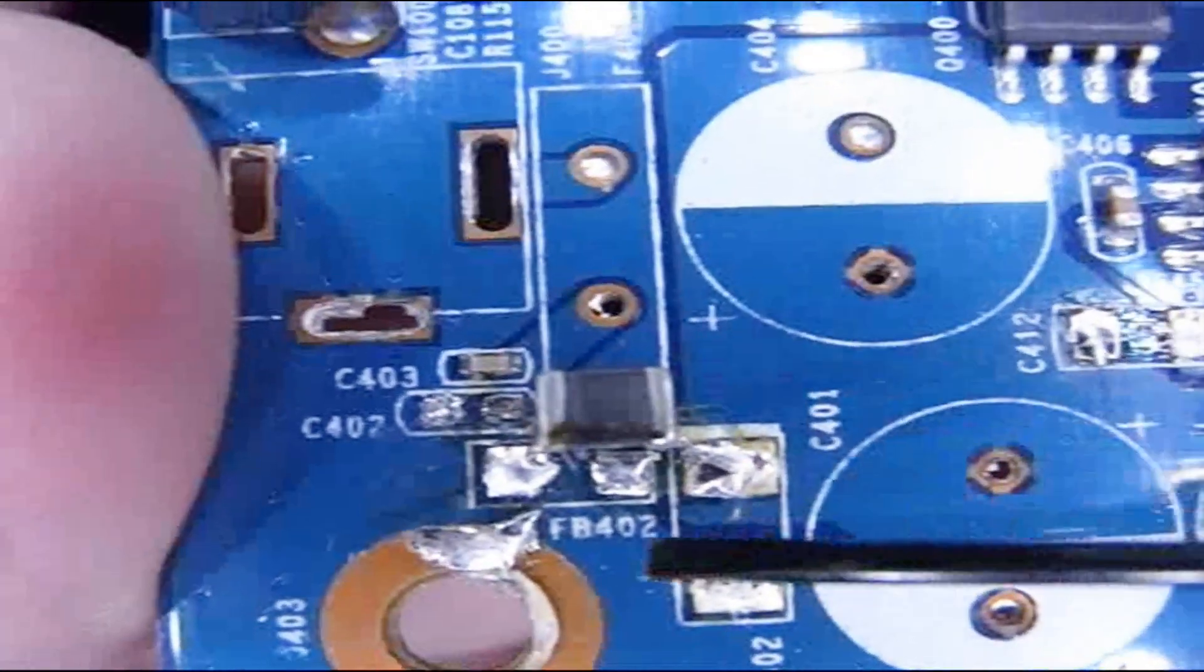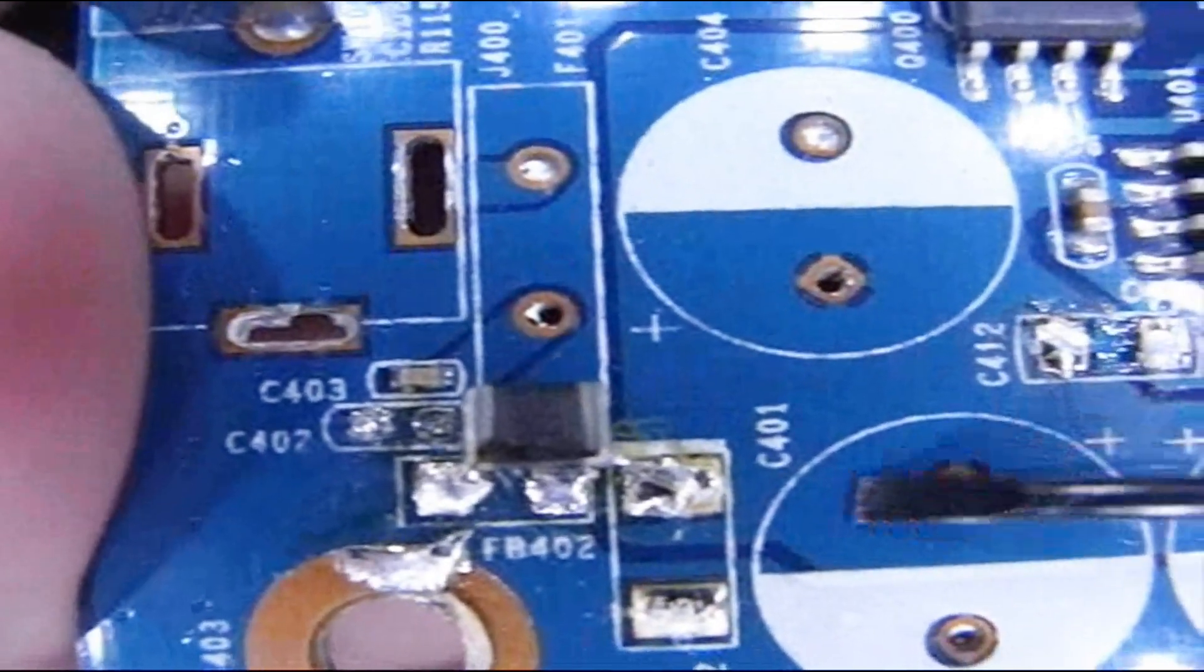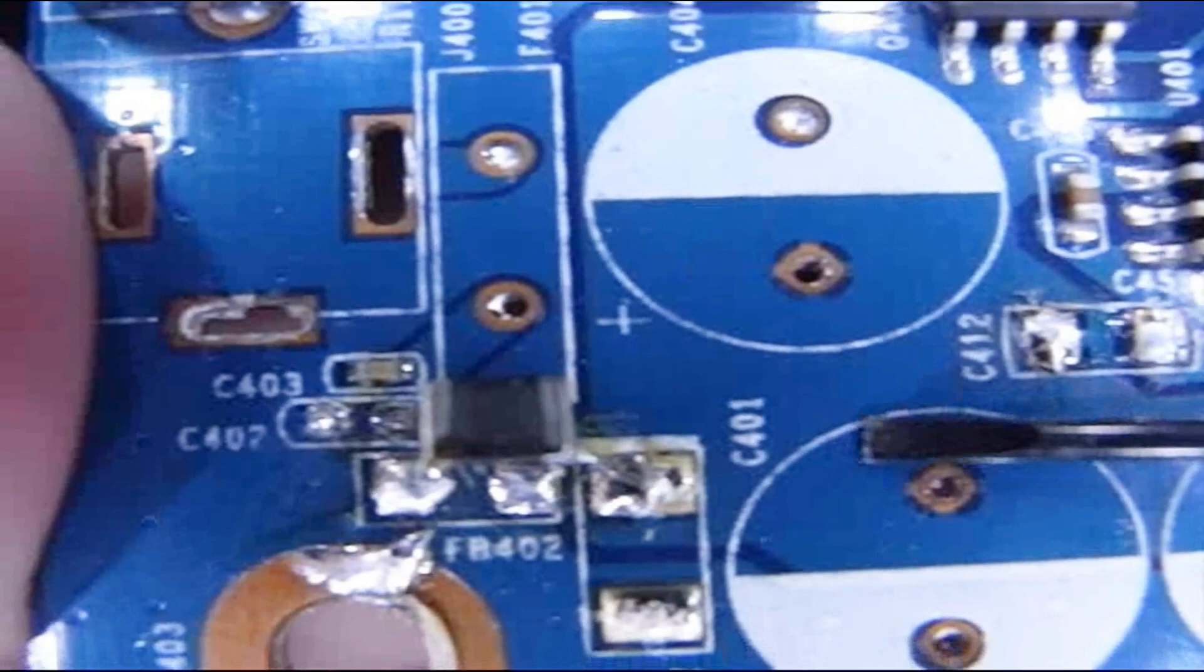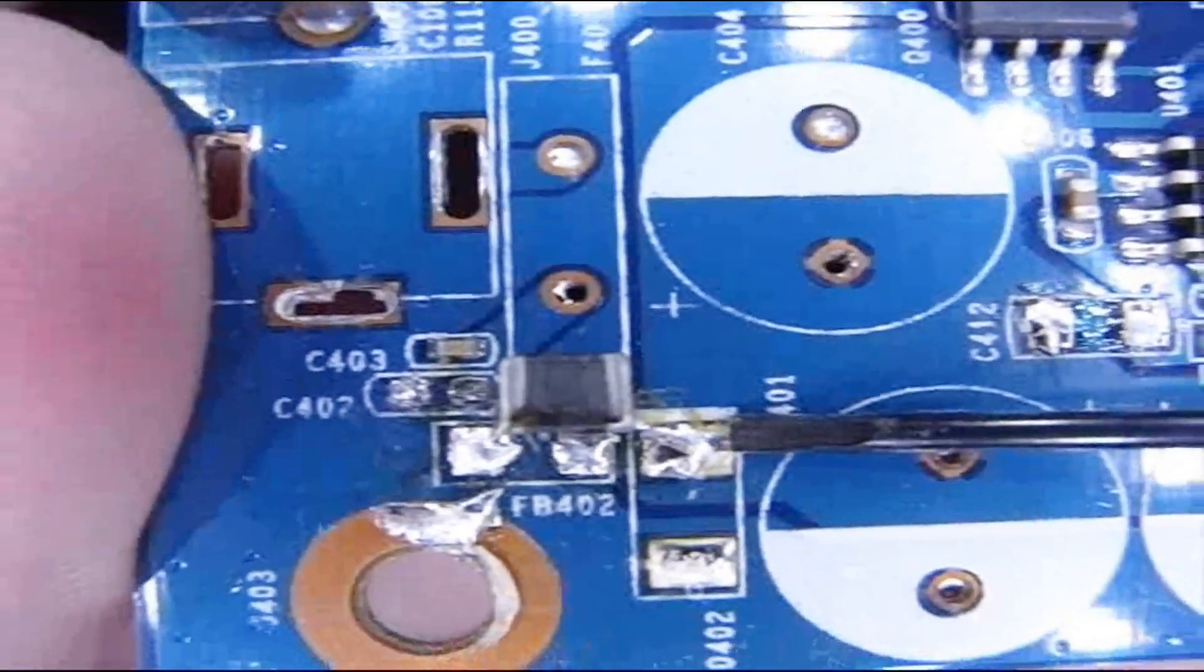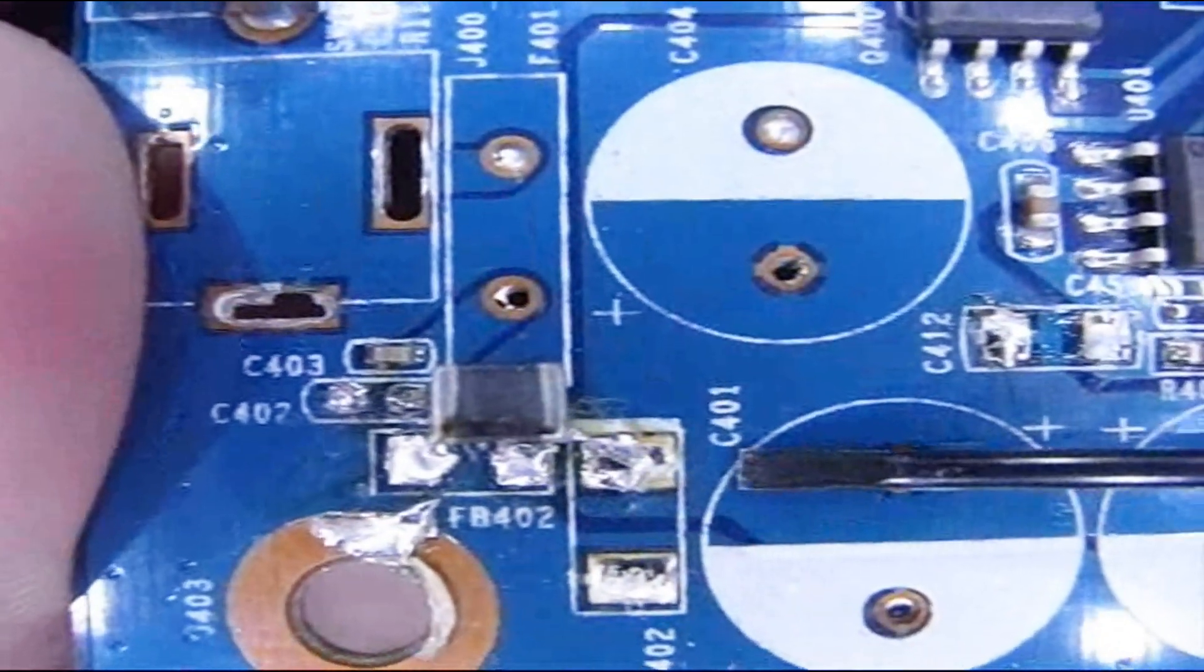Sometimes they're labeled I for inductor but in this board they're also labeled FB. There's a bunch of other stuff on here, capacitors and resistors. Be careful. They look very similar but what you want is something labeled FB or I for inductor.